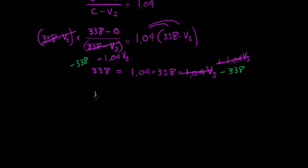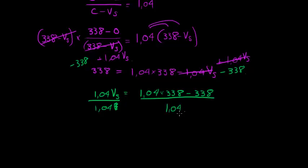So here we get 1.04 vS is equal to 1.04 times 338 minus 338. That's everything in the numerator. Divide both sides with 1.04 to get vS on its own. And there we have our equation. vS is equal to... Let's work that out.